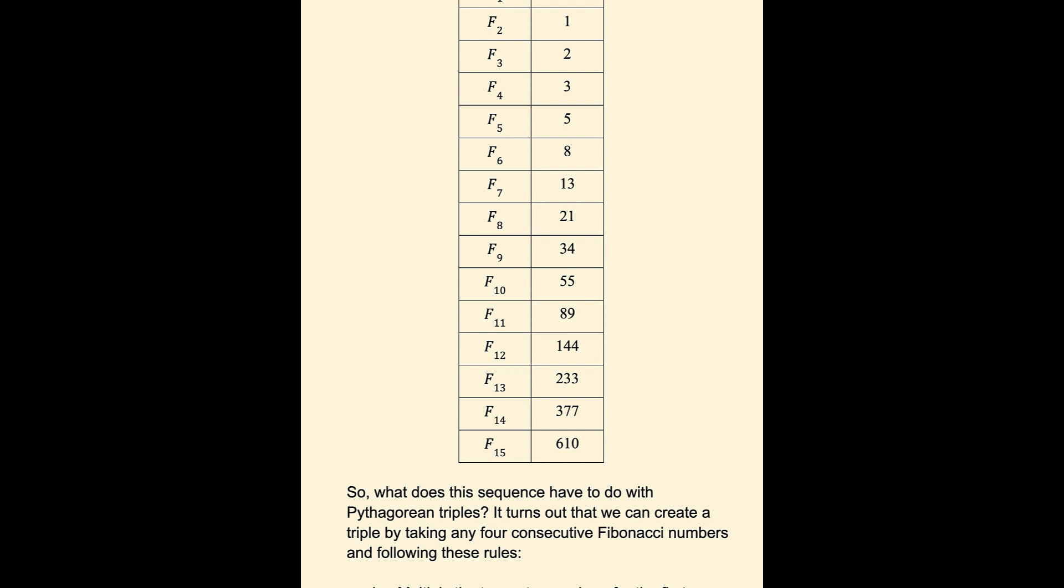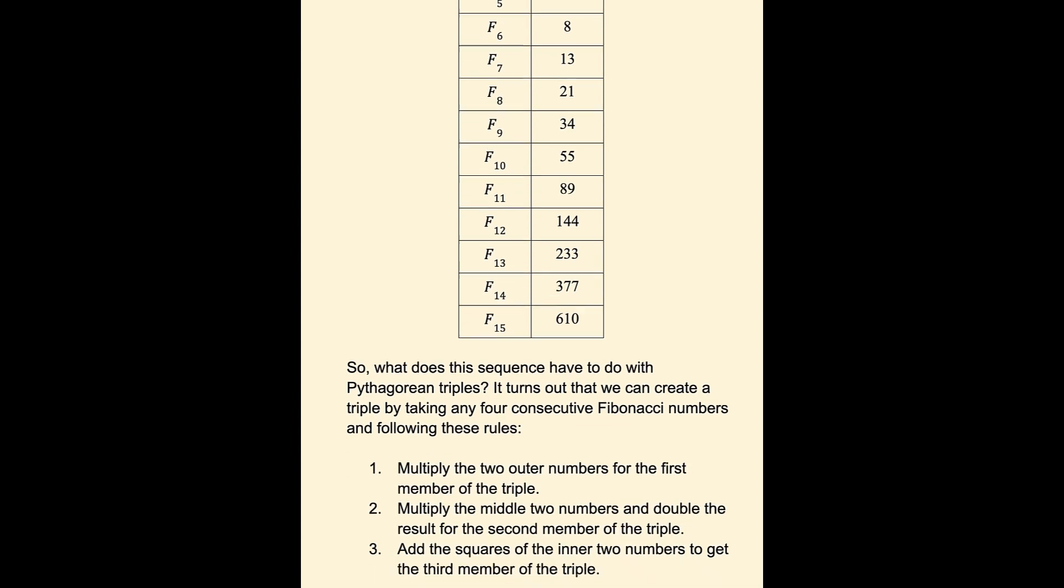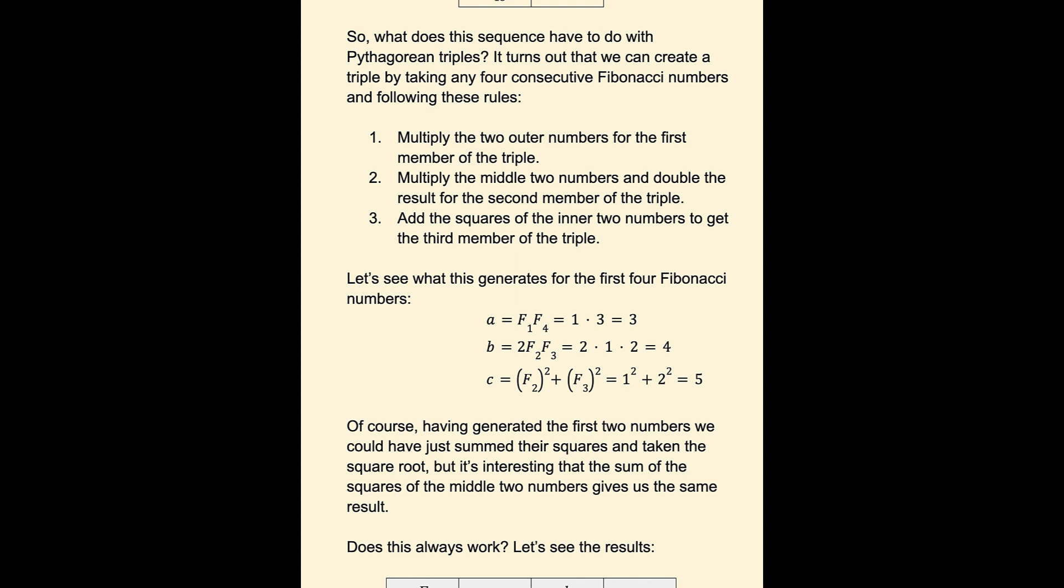It turns out we can create a triple by taking any 4 consecutive Fibonacci numbers and following these rules. Multiply the 2 outer numbers for the first member of the Pythagorean triple. Multiply the 2 middle numbers and double the result for the 2nd member of the triple. Add the squares of the inner 2 numbers to get the 3rd member of the triple.